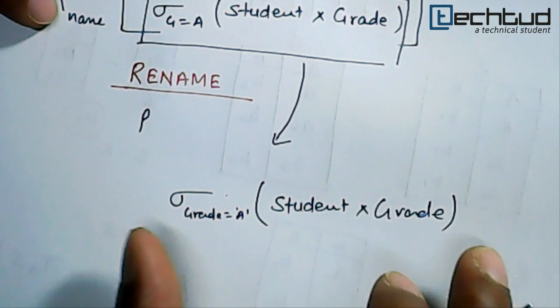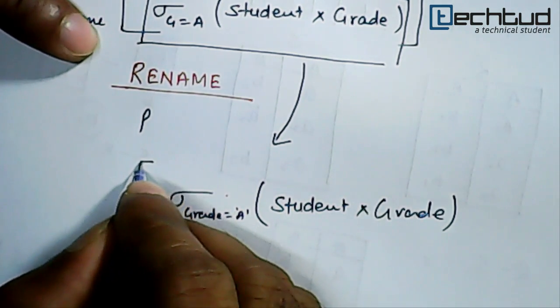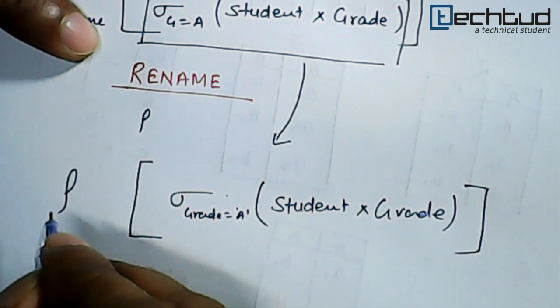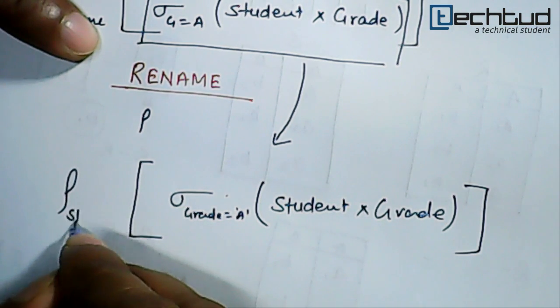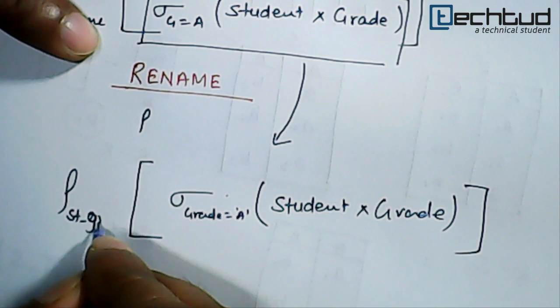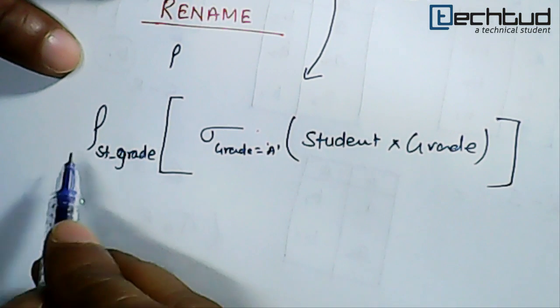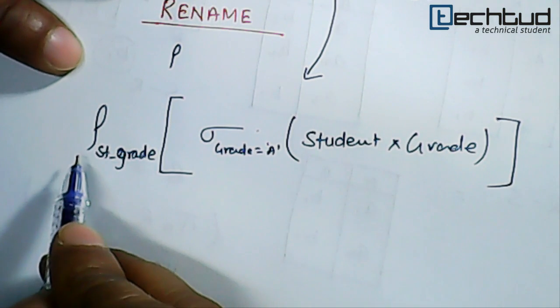So what we can do is give it a name - we will call it Student_Grade. Using this sign ρ, the rename operator, we can give it a name. So we can formally write the renaming operation as follows.